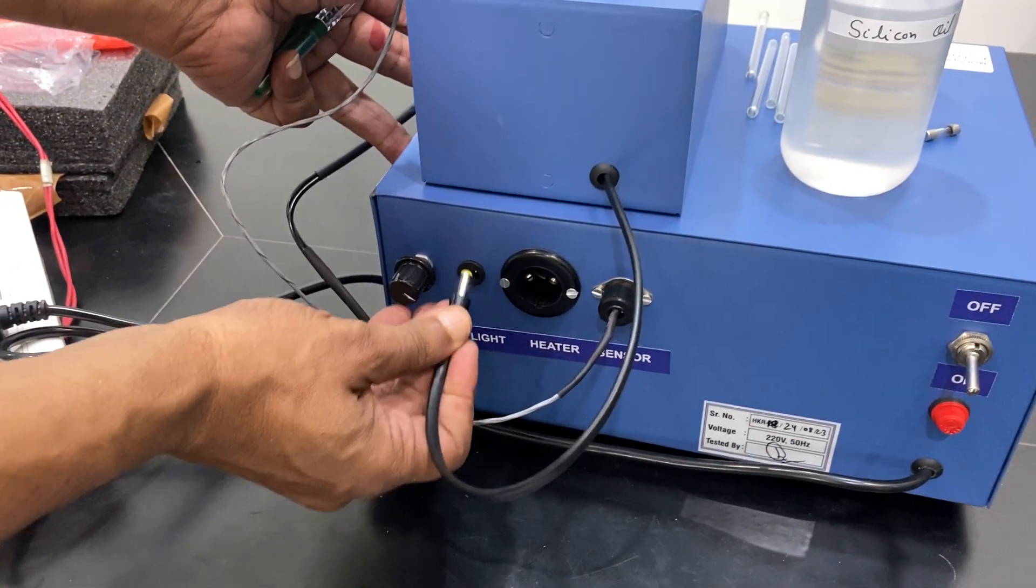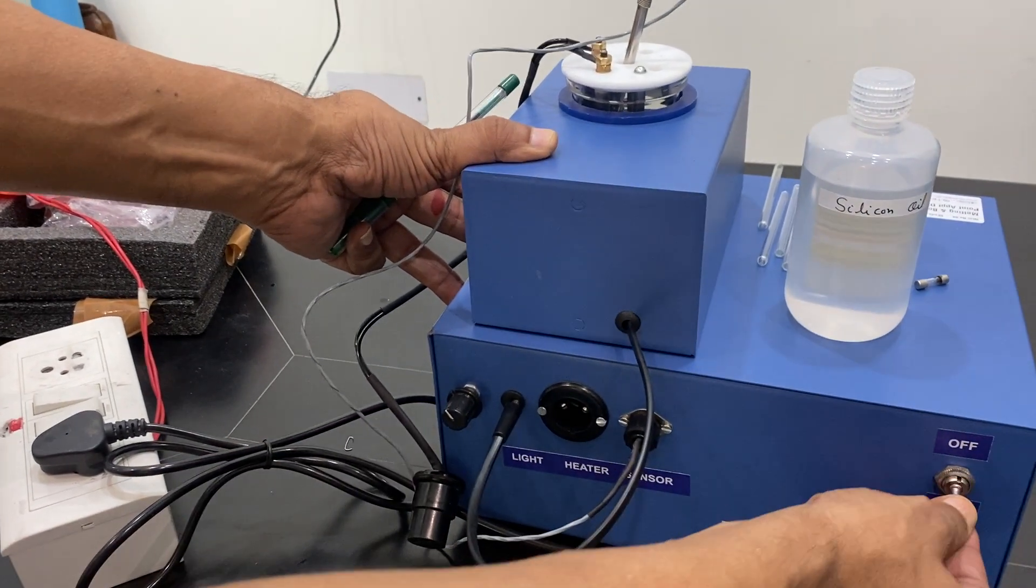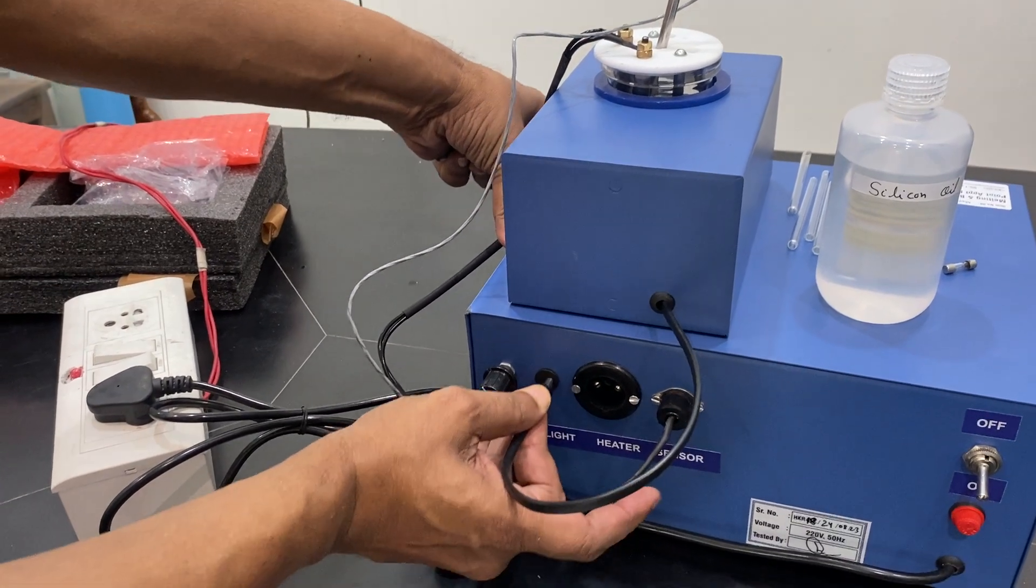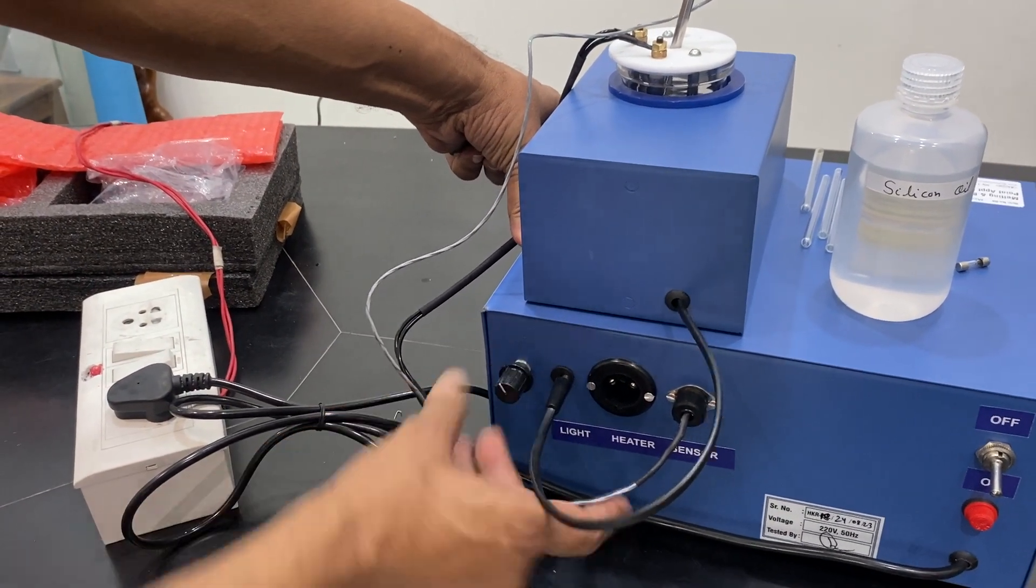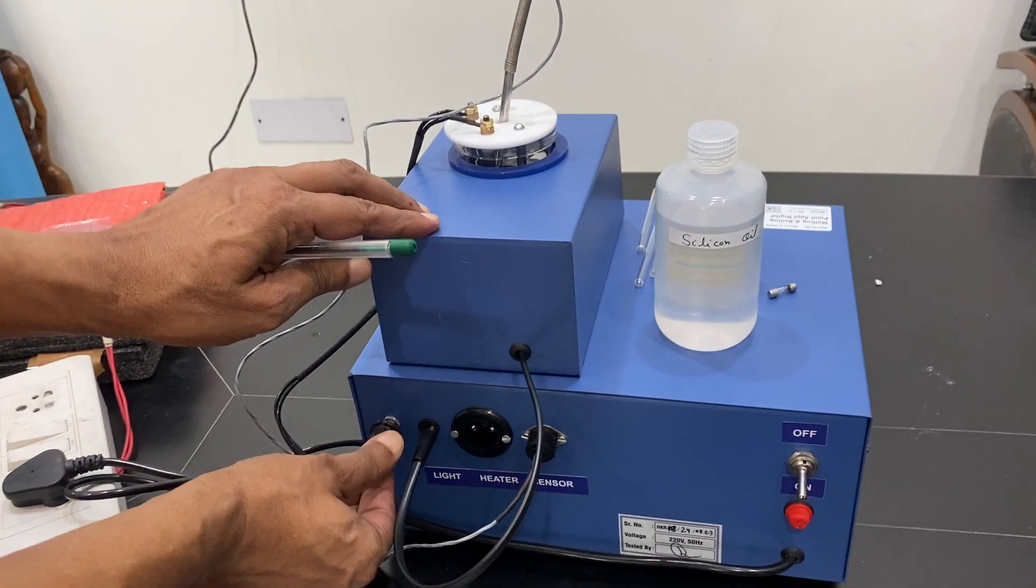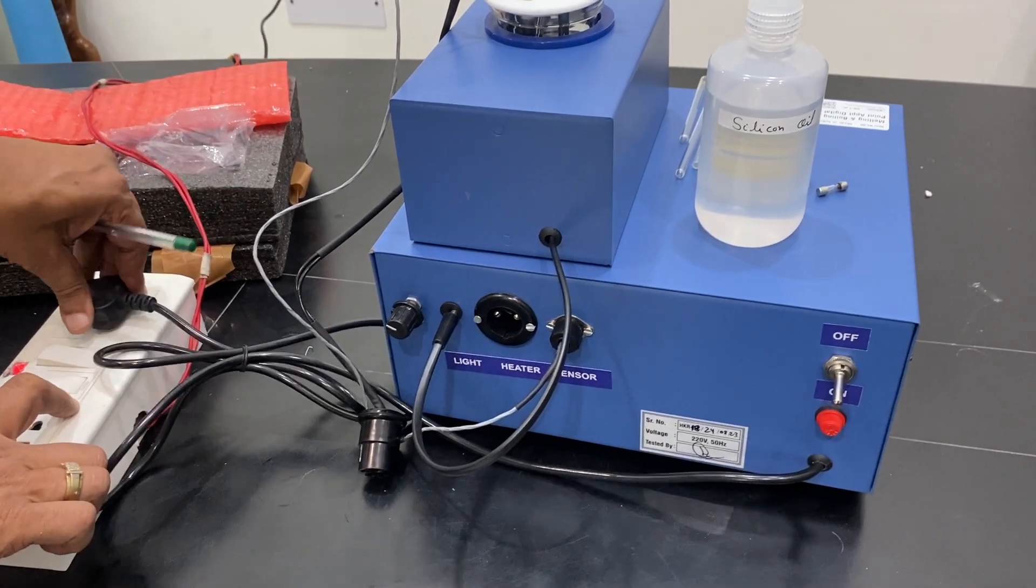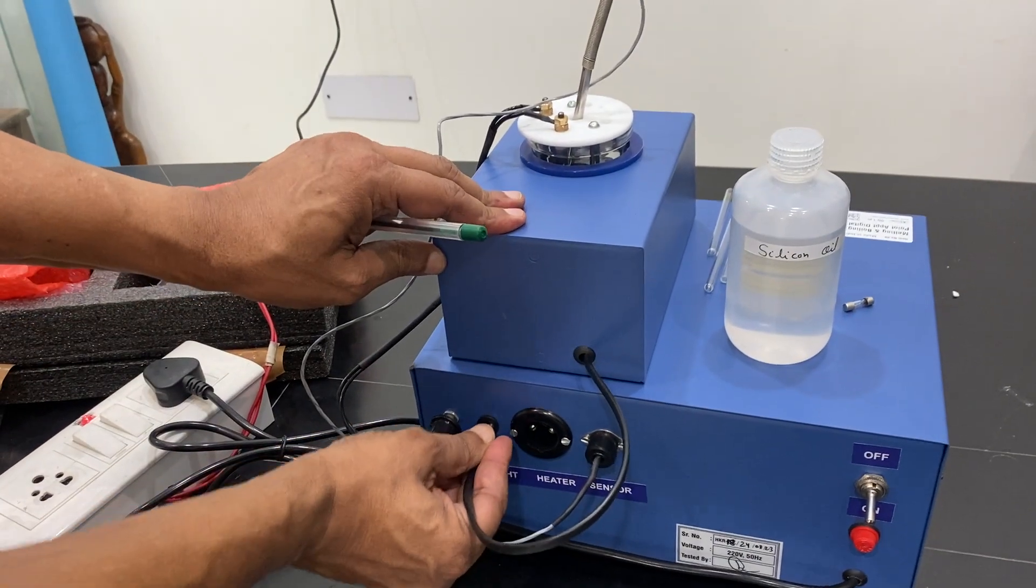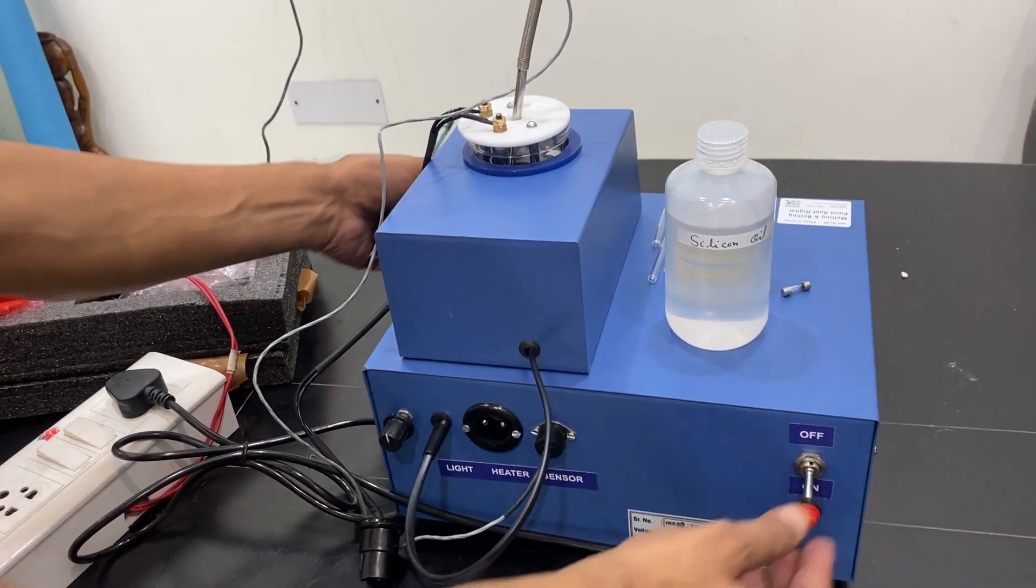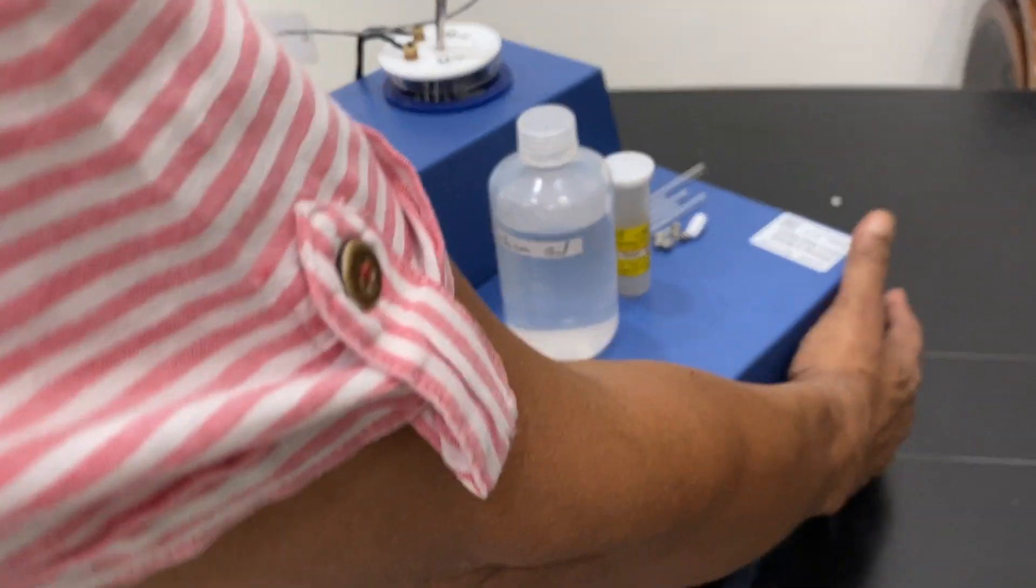This is the light connection. You can switch it on and off. When you connect this light, it will start, and this is the slow motion indicator. Let me show you the working. Here it gives you the indicator. There is an on-off switch here. You switch it on, and then this light will be visible on the back side.